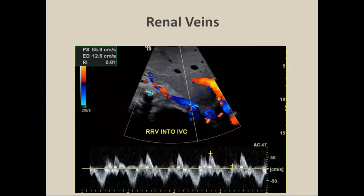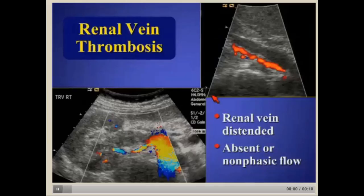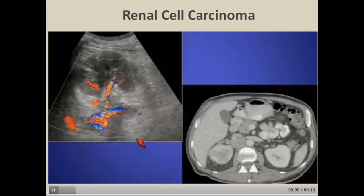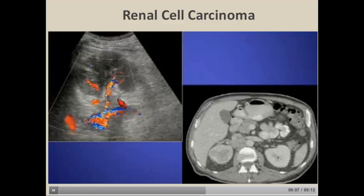A few words about renal veins: normal flow should be phasic, representing transmission from the right atrium — a biphasic pattern. In patients with renal vein thrombosis, typically in the acute phase the renal vein is distended with absence of flow; if flow is seen, it's typically non-phasic. In patients with renal cell carcinoma invading the renal vein, you may see absence or compression of the renal vein — important findings for staging the degree of malignancy.